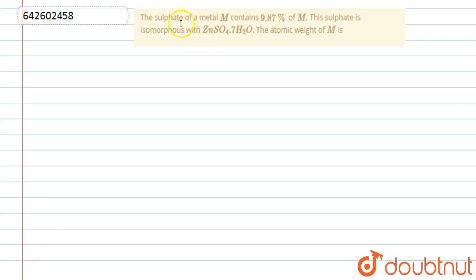Hello everyone, let's start this question. In this question, we are given that the sulphate of a metal M contains 9.87 percent of M. This sulphate is isomorphous with ZnSO4·7H2O, and we need to find the atomic weight of M.